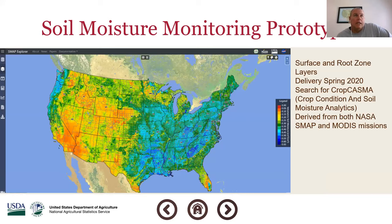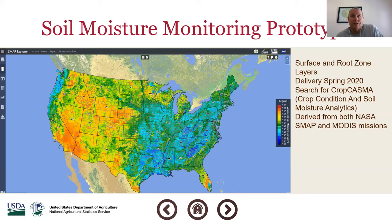We're also working on a soil moisture prototype called CROPCASMA — CROP Condition and Soil Moisture Analytics. It's derived from both the NASA SMAP mission — Soil Moisture Active Passive — and the MODIS mission. We're looking at releasing this in the next few weeks. It combines vegetative condition and soil topsoil and root zone level moisture analytics. You can see from that color chart that the East Coast was showing a lot of standing water coming down over the U.S.